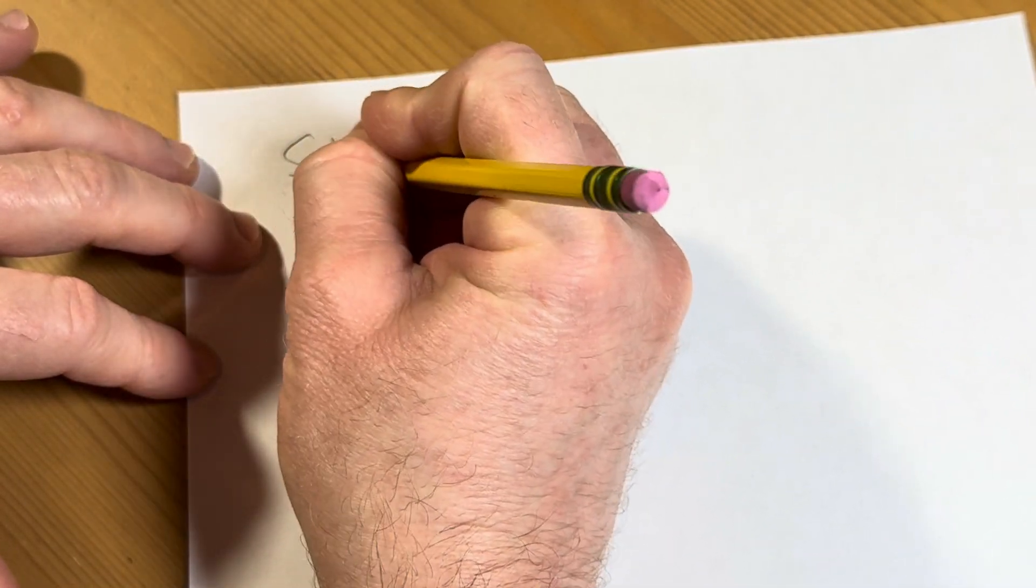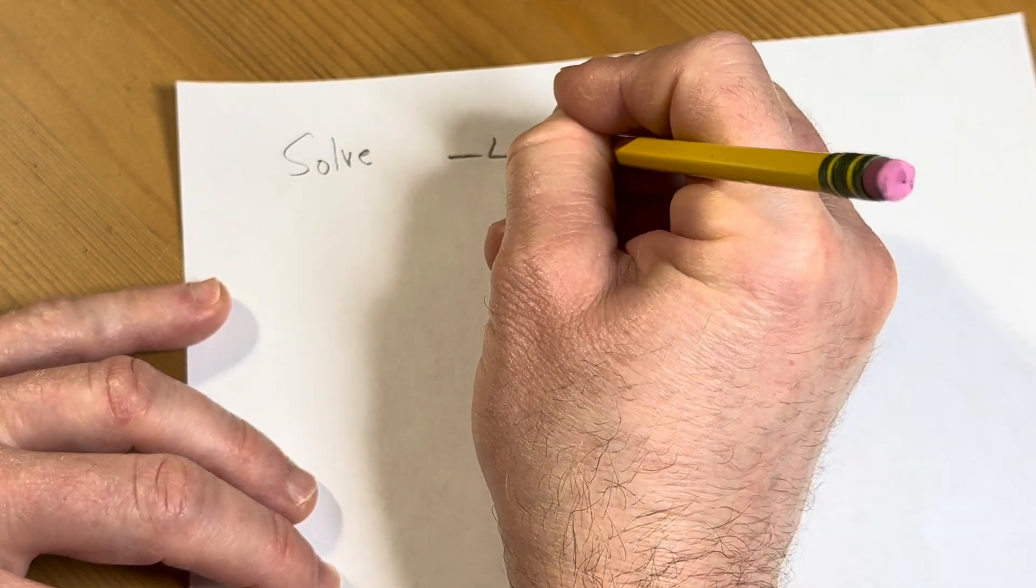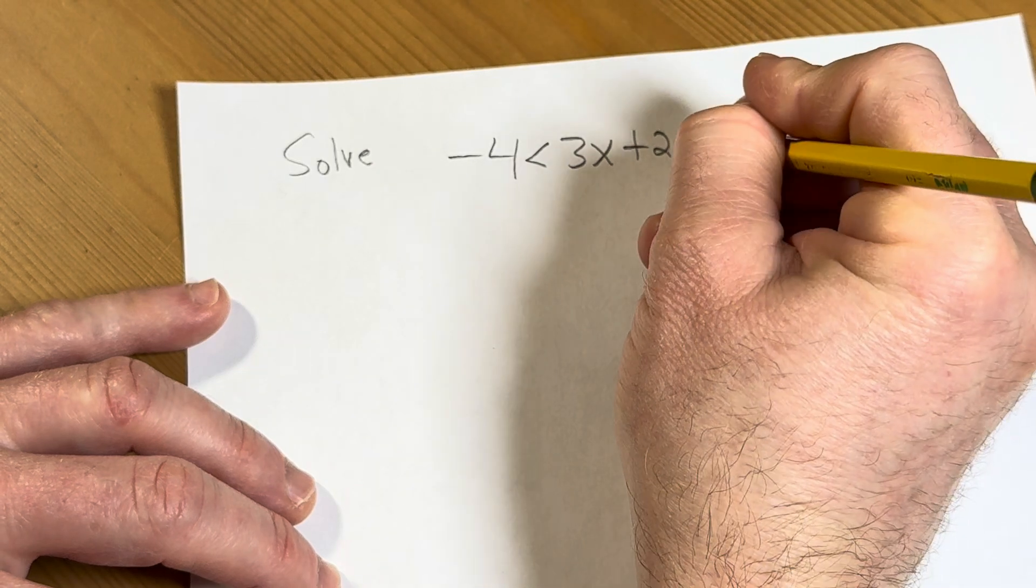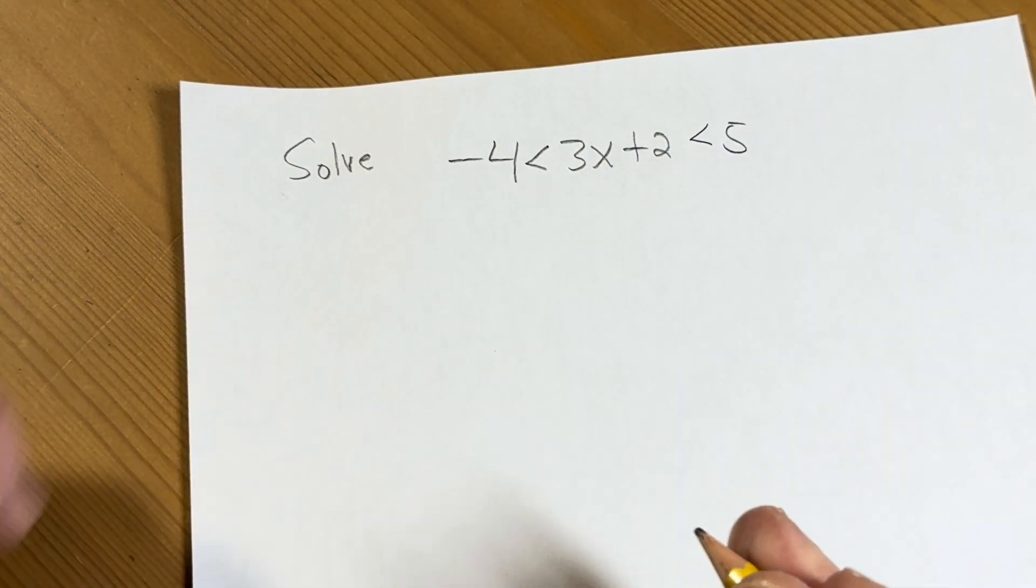The question is to solve, and the inequality is the following: negative 4 less than 3x plus 2 less than 5. So that's the inequality we're going to solve in this problem.